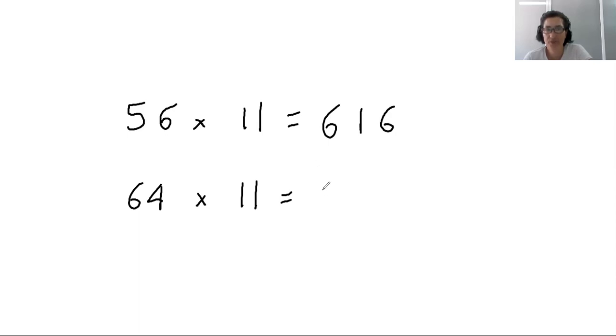Let's see, 64 times 11. We write 6, we write 4, the sum of the two is 10. So we raise the 6 and 1, 6 plus 1 makes 7. So we have 704.